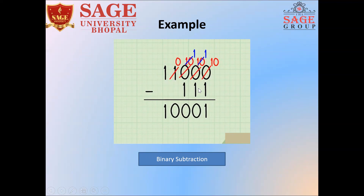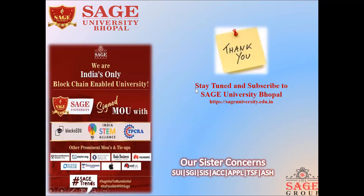Using the same method, you can check your particular answer for any set of digits. First, convert to decimal, then check the answer in decimal to verify the binary subtraction result. Thank you very much for watching my video. In the next lecture, we will discuss the other operations in binary operations. Thank you, everyone.